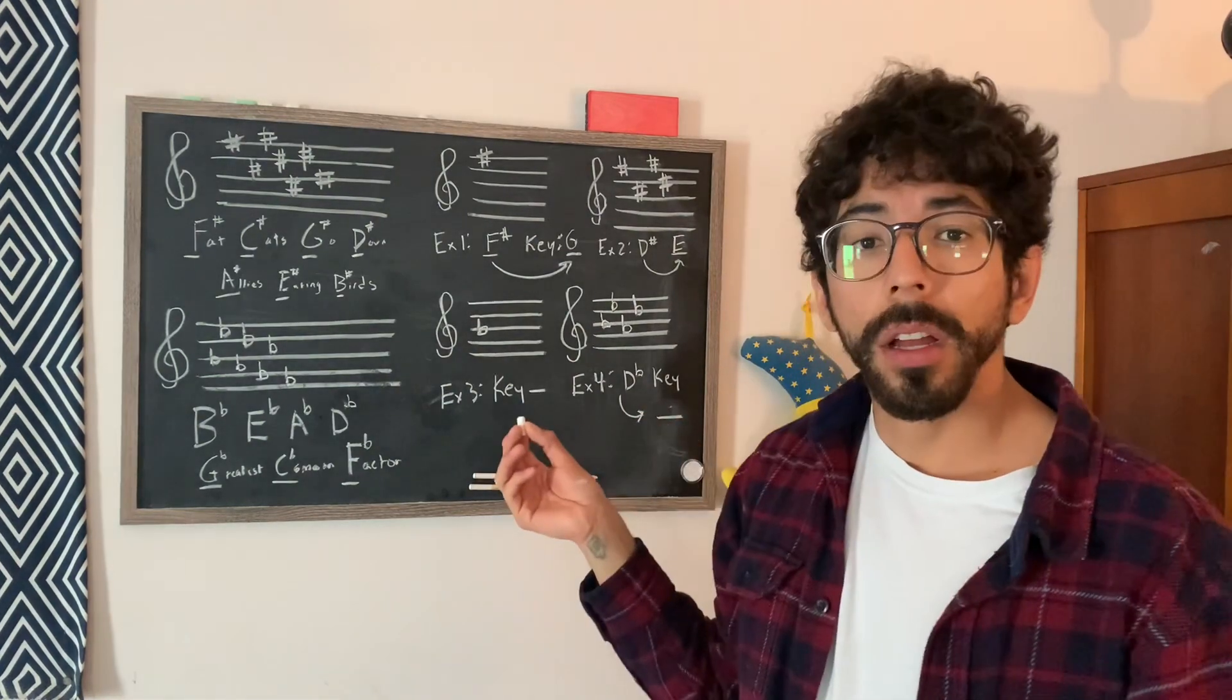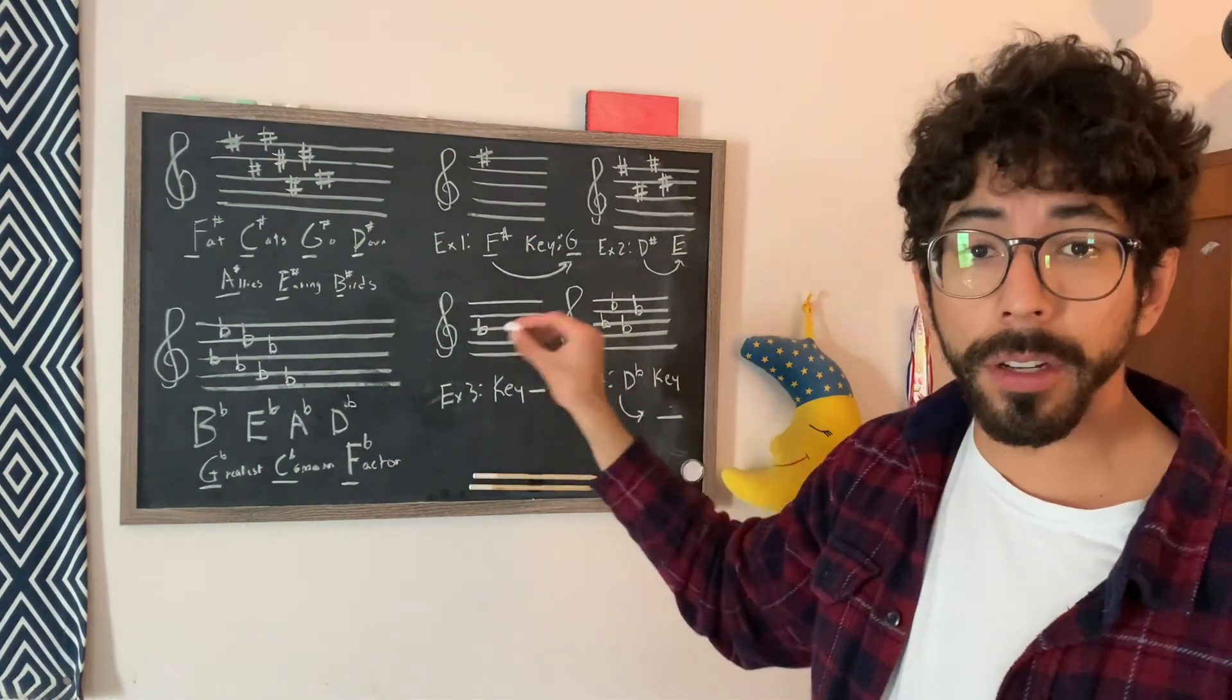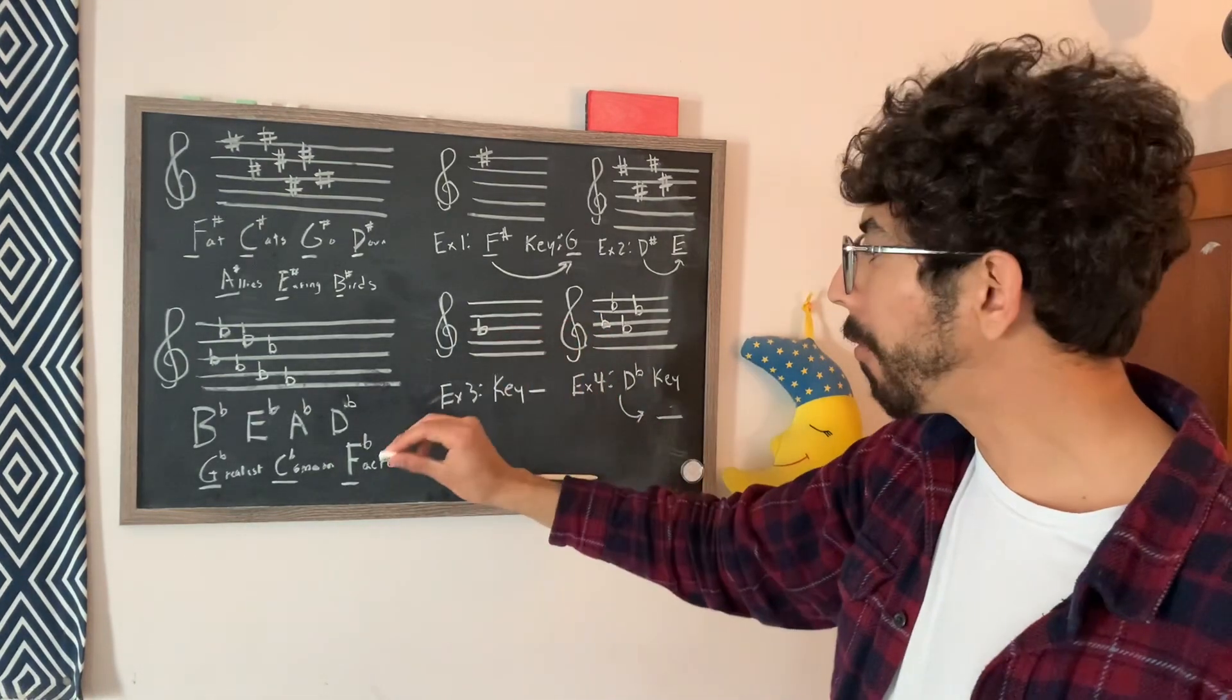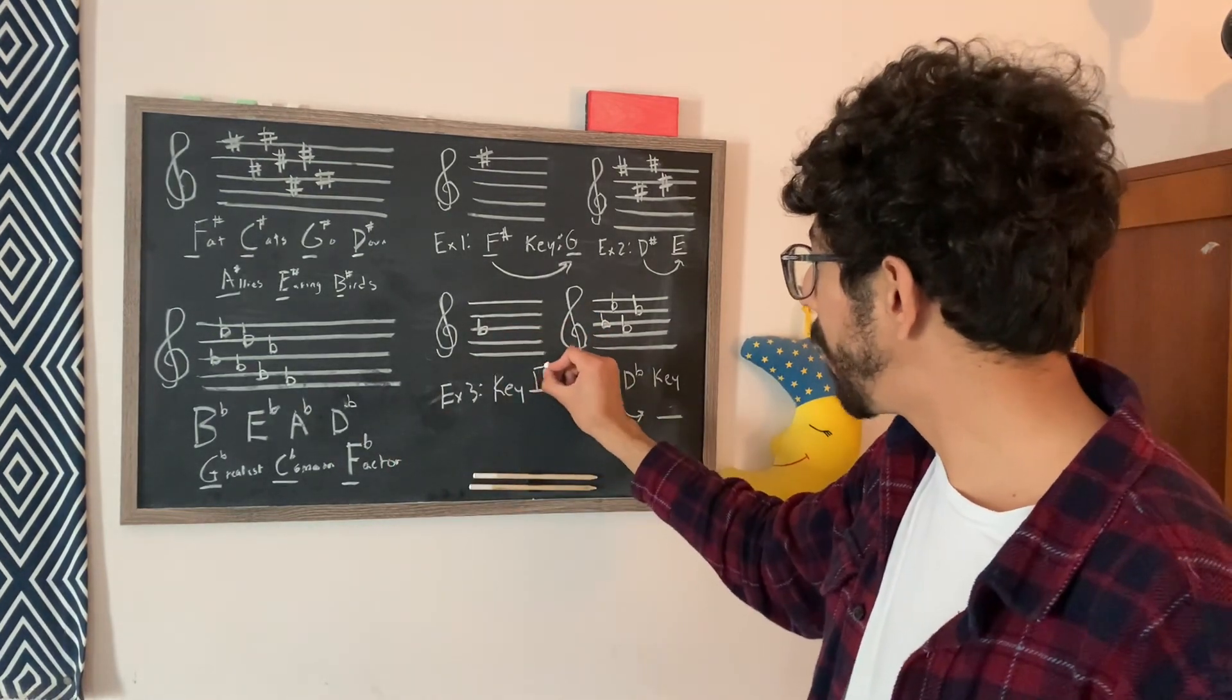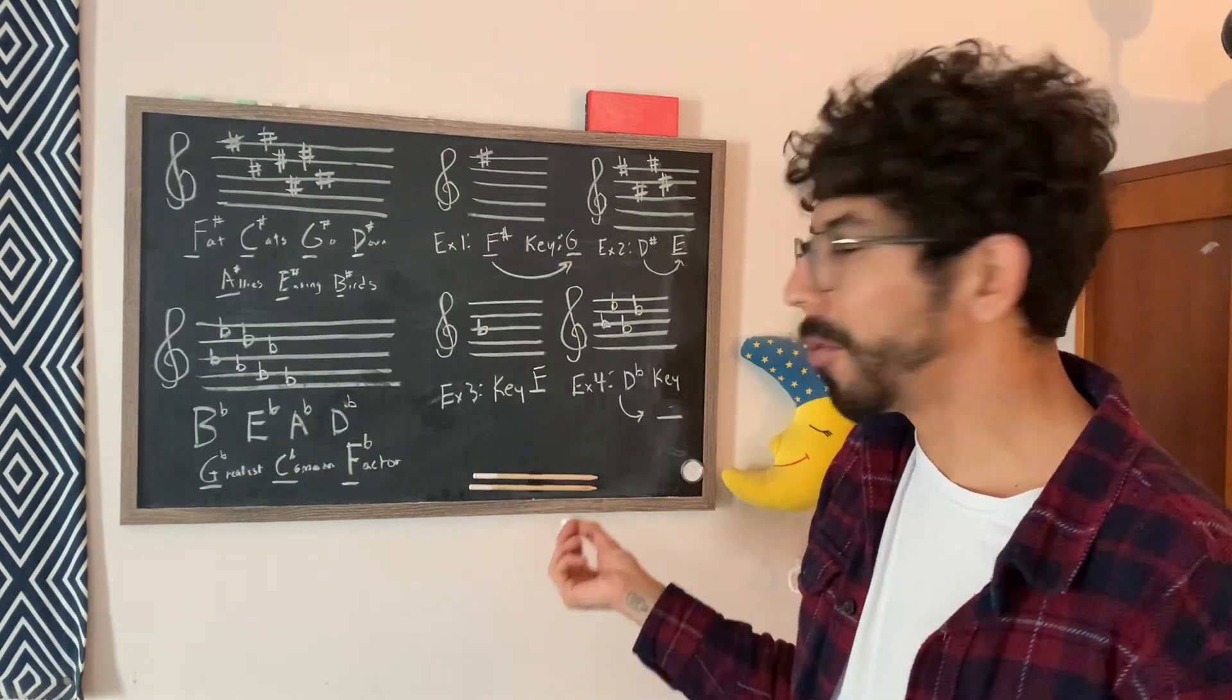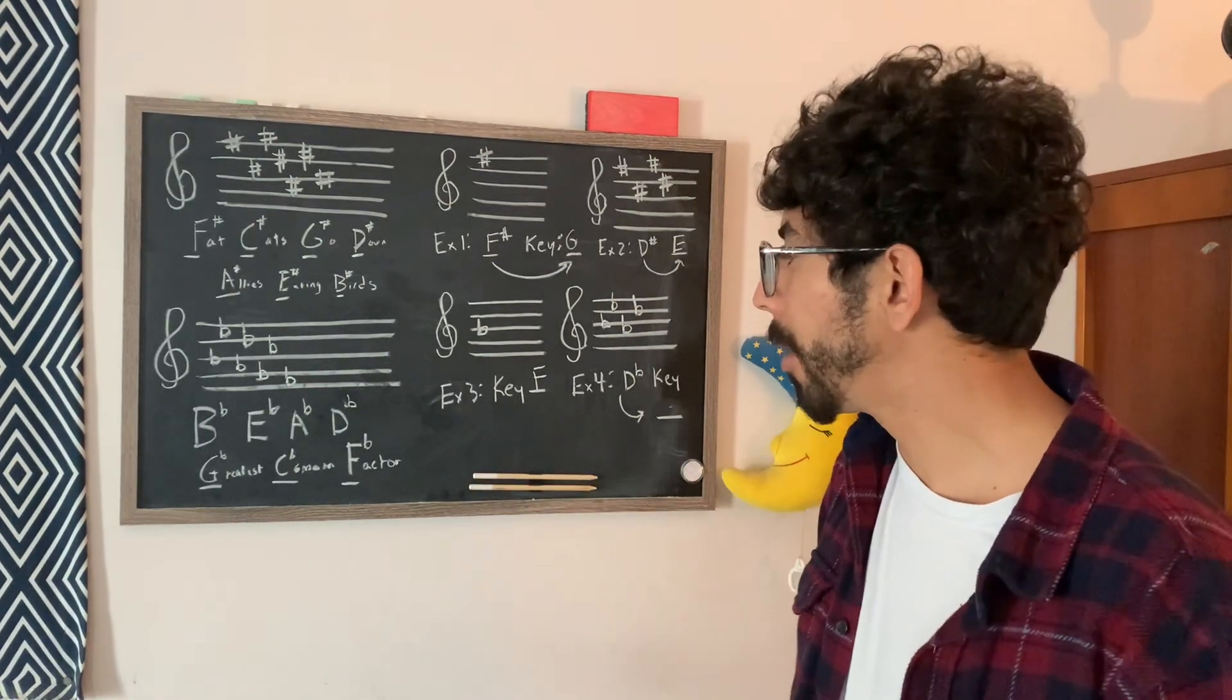Okay, with a couple of examples, like I said, the first flat's always an exception. This one you just have to kind of memorize. If there's one flat, which is B flat, the key is going to be F major. That's just something you have to know. There's no way around it. You just kind of have to memorize that one.